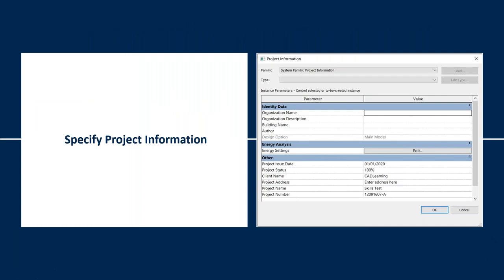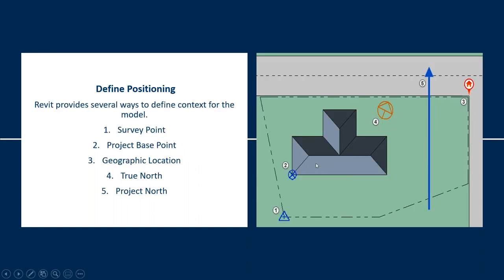Jumping back to where you specify your project-specific information: in Revit's Manage tab, you can go to the Project Information panel. If you scroll down in this dialog box, you'll see a section that says 'Other,' and this is where you can enter your details. If your title block has been set up correctly, this will also automatically pull into and update in your title block as well. Looking at the ways Revit provides to define context for our model: we've got our survey point (a small triangle), your project base point, your geographic location, your true north, and also your project north.